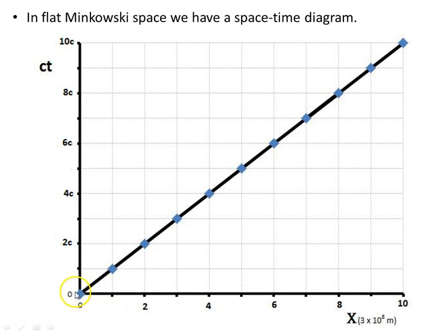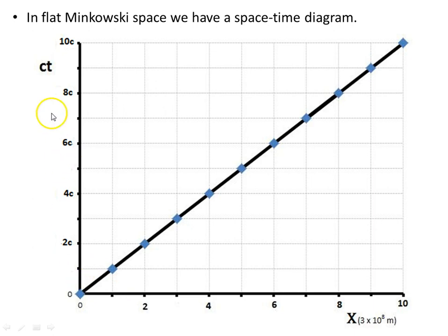When the path of light in spacetime is plotted, it follows this diagonal line here with gradient 1, at an angle of 45 degrees. This first unit here is 3×10⁸ metres, and this first tick mark is also 3×10⁸ metres because time has been rescaled. All observers in relative motion with respect to each other agree on the speed of light as being constant — 3×10⁸ metres per second — so this diagonal line has a gradient of 1.